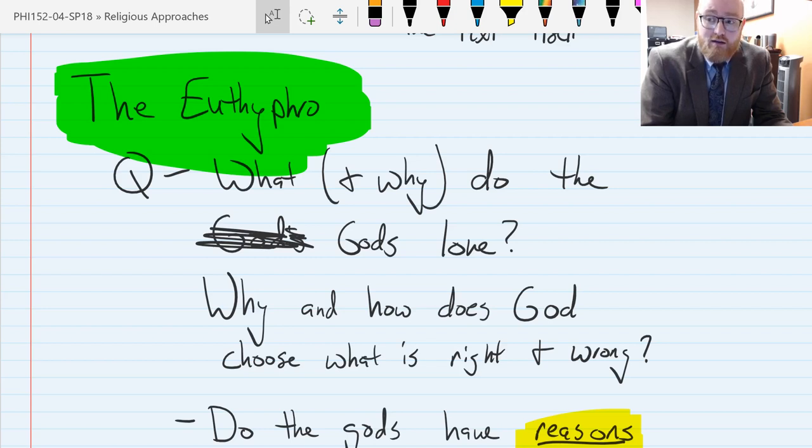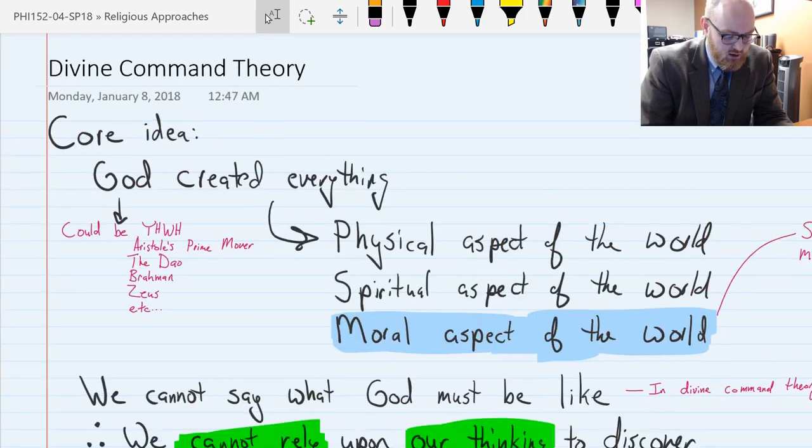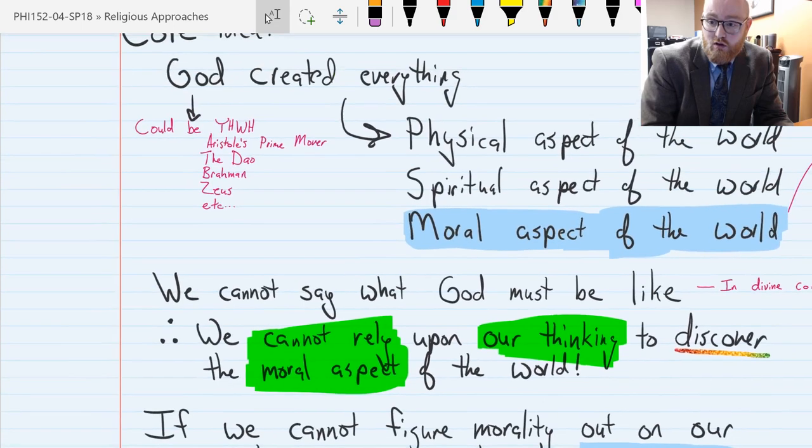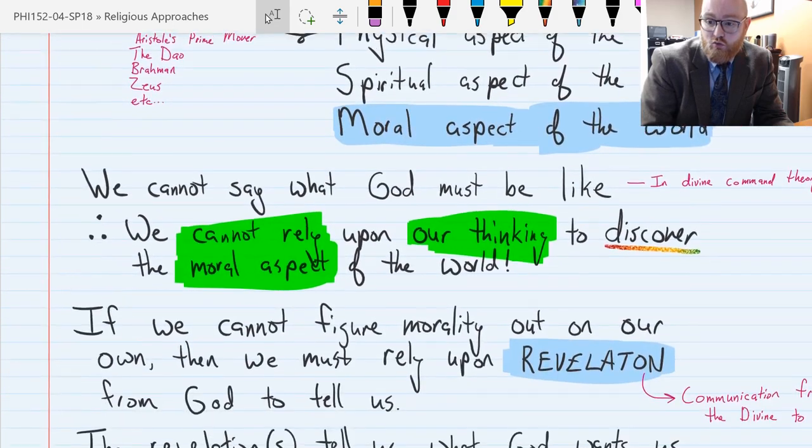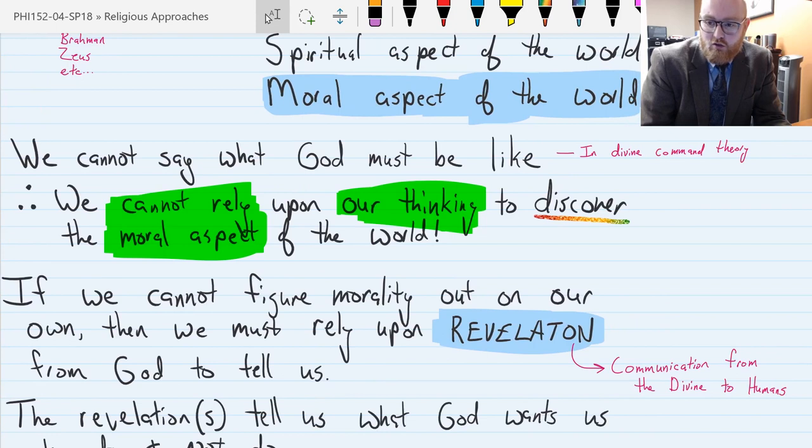And then we say, why is a given thing right or wrong? It's because the gods say so. And then there's a question of how is that communicated to us? It has to be through revelation. And see if I have this up here, it has to be through revelation. So this is what I'm saying right here. It has to be communication from the divine to humans.